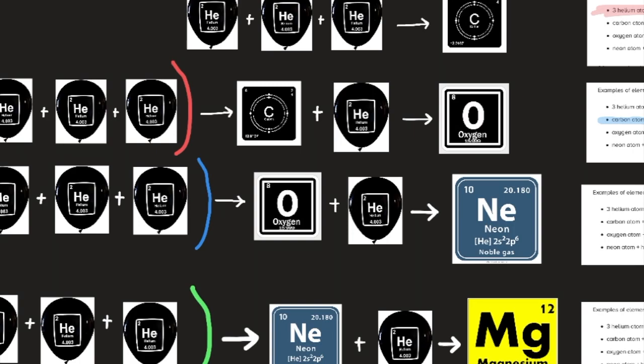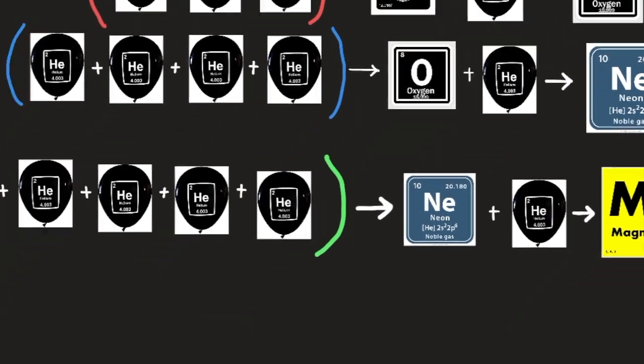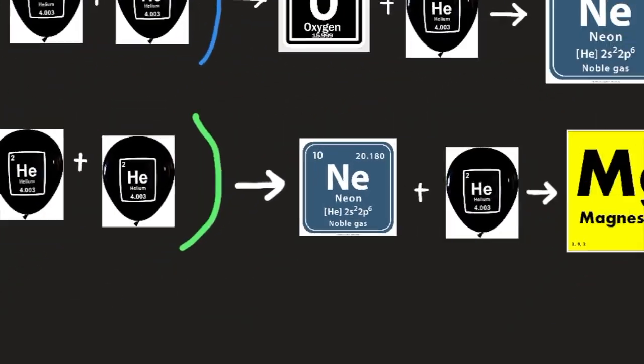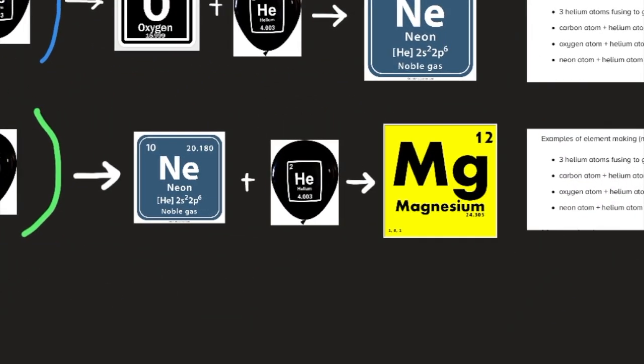And that's how we get to the element neon, element number 10. If we fuse neon with yet another helium nucleus, we get magnesium, an element we're yet to talk about, element number 12. We'll eventually get to that element, but it's awesome to know that in retrospect, all of the elements are created on top of each other.